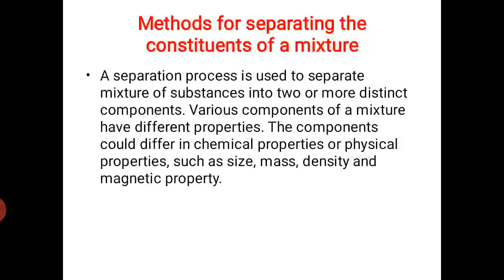The components could differ in chemical or physical properties. Physical properties such as size, mass, density, and magnetic properties are used to separate components. To choose a suitable method for separation, first find out the property of the constituents which is different from that of the others.